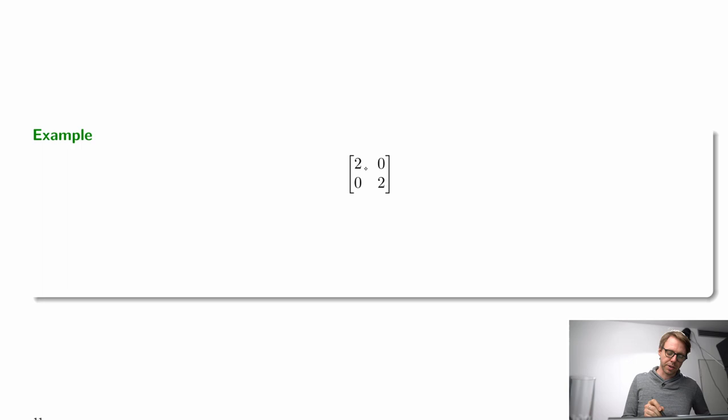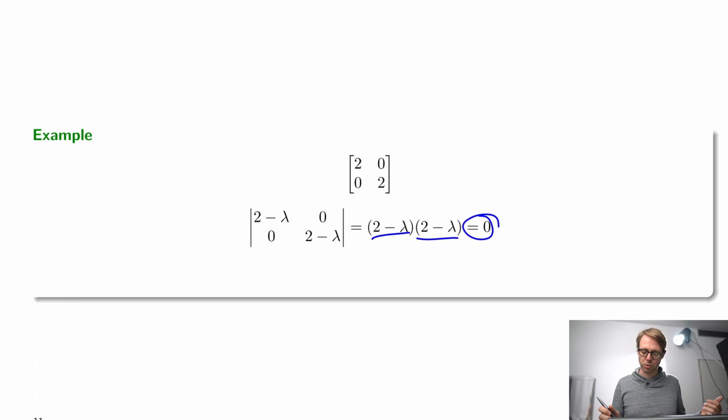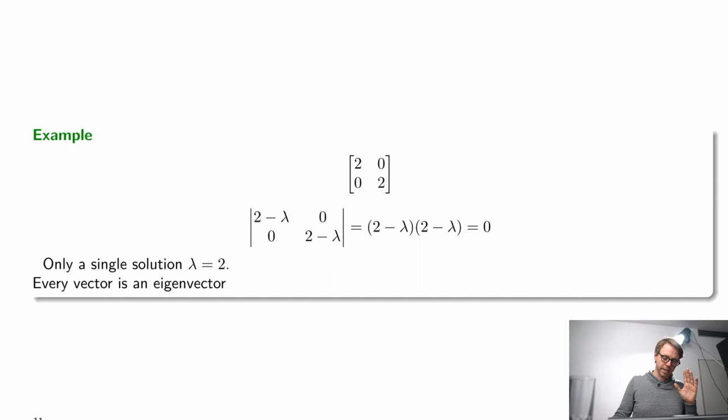Let's look at another example with the matrix (2, 0; 0, 2). The characteristic polynomial from subtracting lambda times the identity gives (2 minus lambda) times (2 minus lambda) equals zero, which again has only the single solution lambda equals 2. An interesting thing here: for this matrix, every vector is an eigenvector.